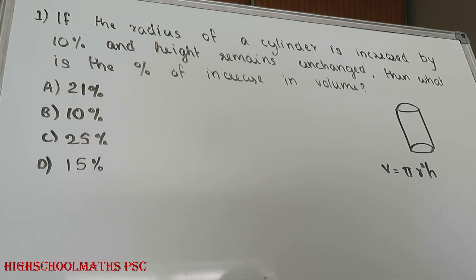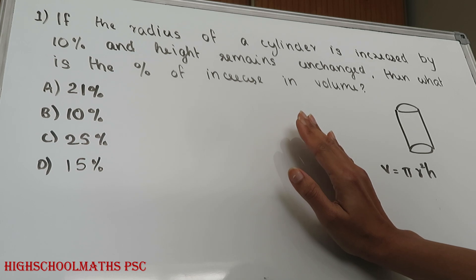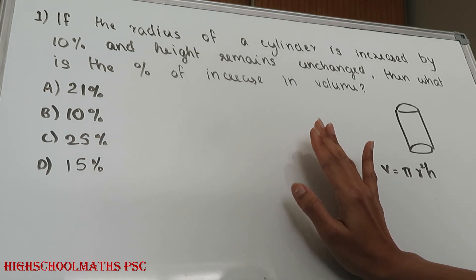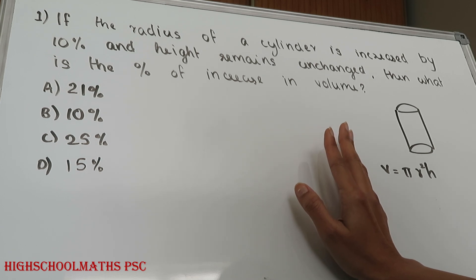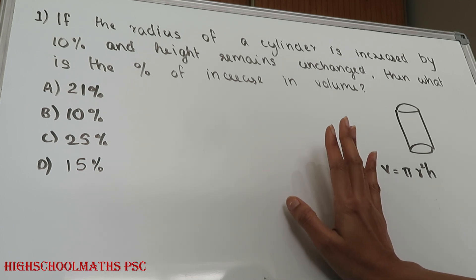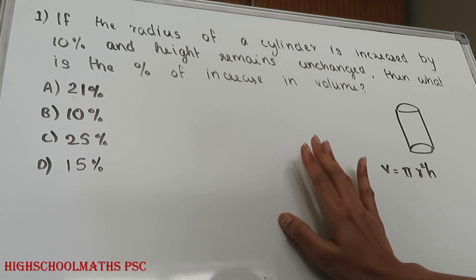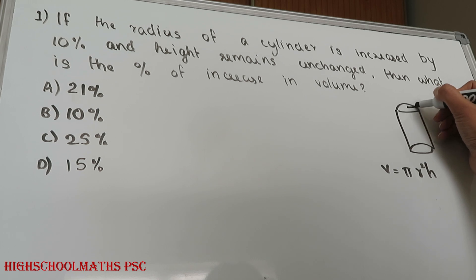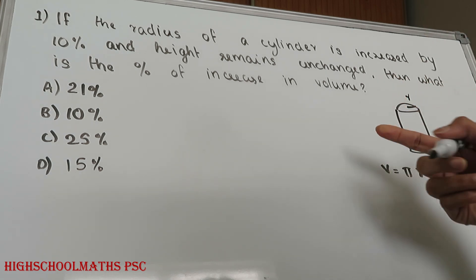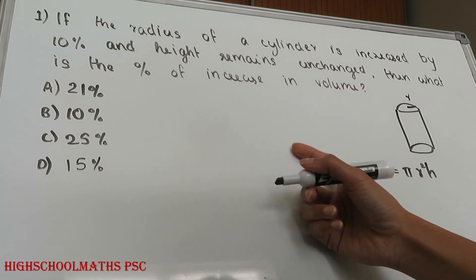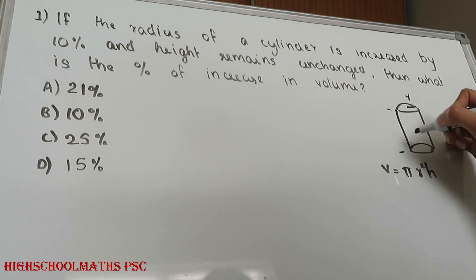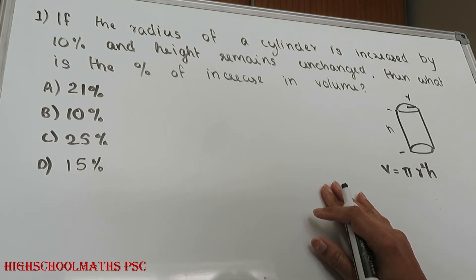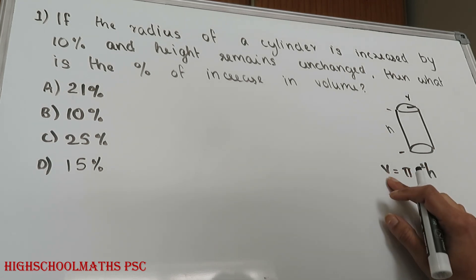Now we have to ask questions. If the radius of a cylinder is increased by 10% and height remains unchanged, then what is the percentage of increase in volume? The radius has an increase of 10, and the height remains unchanged. That is the increase in volume we need to find.